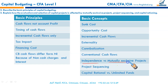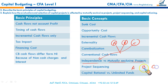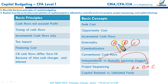Independent projects mean projects A, B, and C can all be taken simultaneously — they are independent of each other. Mutually exclusive means if you take A, you can't take B; only one can be selected. Independent projects can all be undertaken if you have sufficient money and there is no capital rationing.